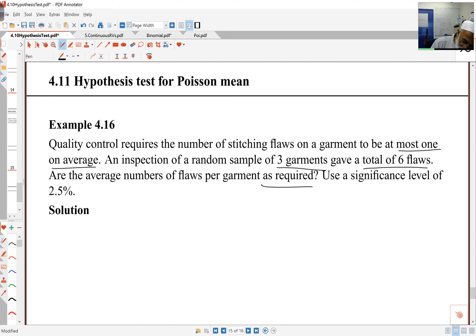We'll use a significance level of 2.5%. We'll set this up by first defining our random variables and the distribution. We sampled three garments, and that's what we'll base our decision and statistics on.